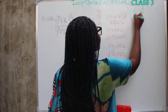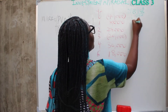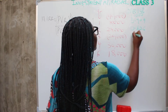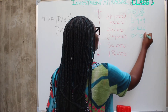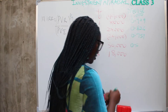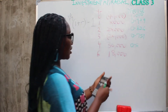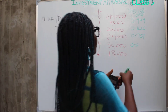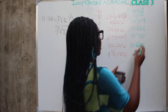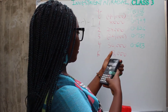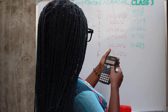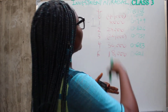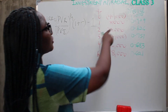Discount factors at 10%: year 0 is 1.000, year 1 is 0.909, year 2 is 0.826, year 3 is 0.751, year 4 is 0.683 (that's 1.1 raised to minus 4), and year 5 is 0.621 (1.1 raised to minus 5). Now let's discount these cash flows.